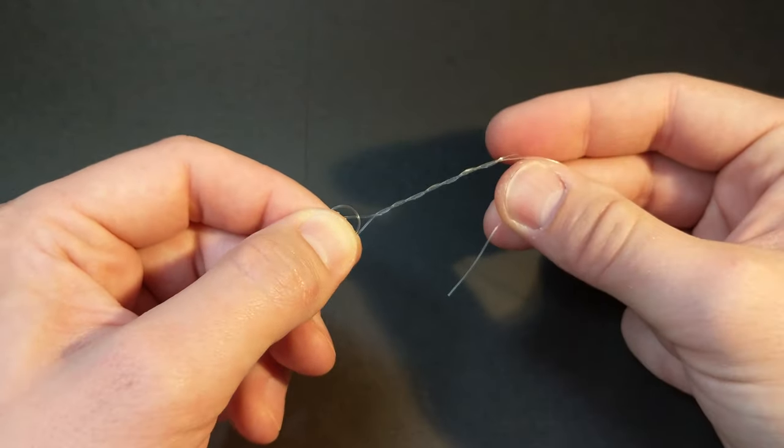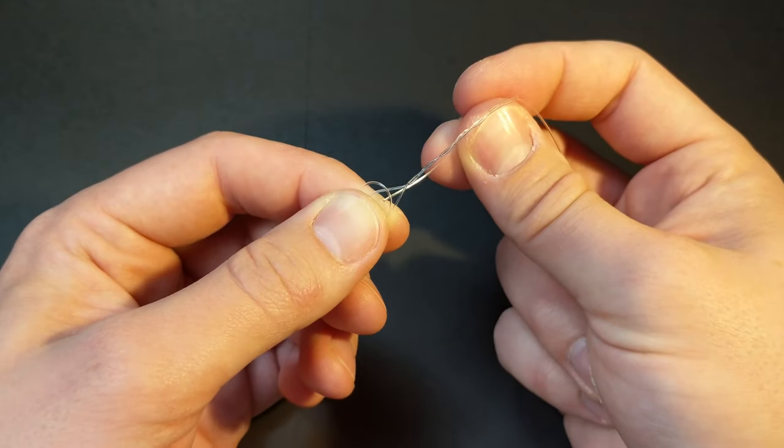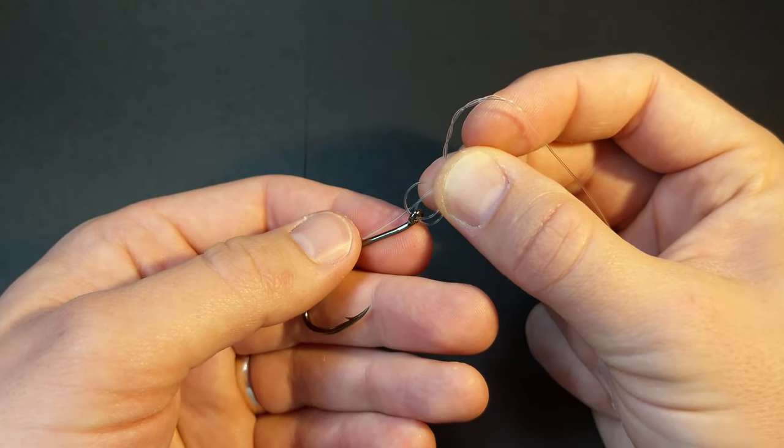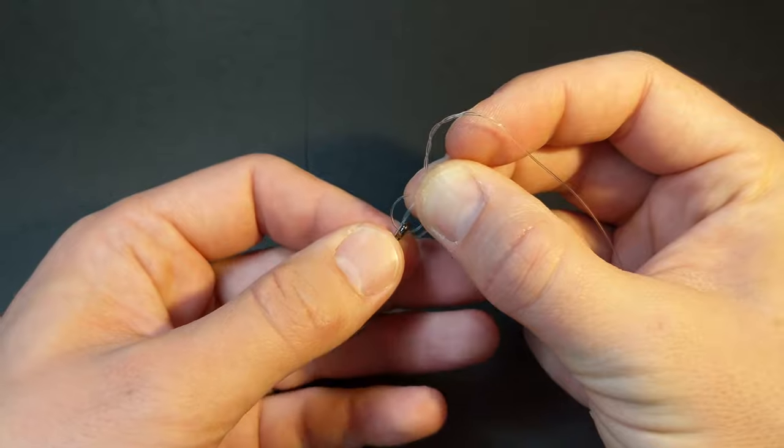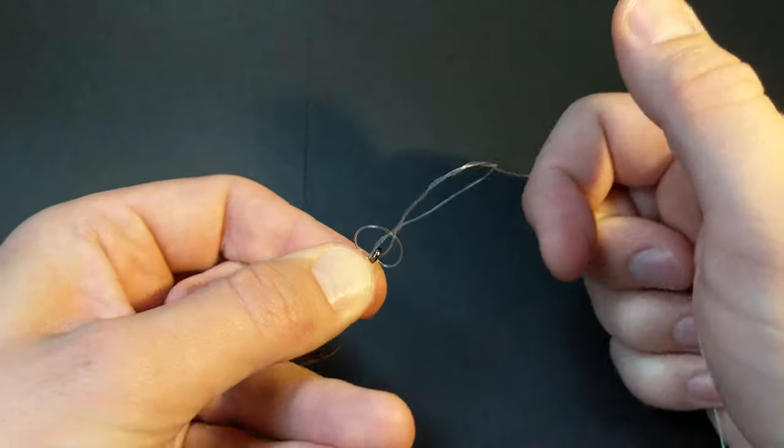Now, put the tag end through both loops you created here. Once it's through both loops, you want to pinch that tag against the hook so it doesn't slide out when you tighten the main line.